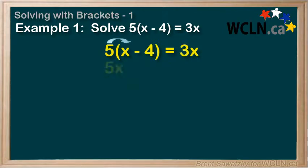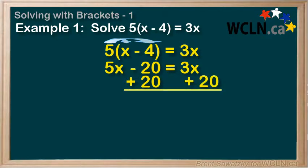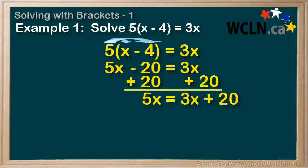Distributing: 5 times x is 5x, and 5 times negative 4 is negative 20, with 3x still on the right. To get x by itself on the left, we need to get rid of the minus 20, so we add 20 to both sides. On the left we have 5x, and on the right 3x and 20 are not like terms, so we can't combine them — we're left with 3x plus 20.